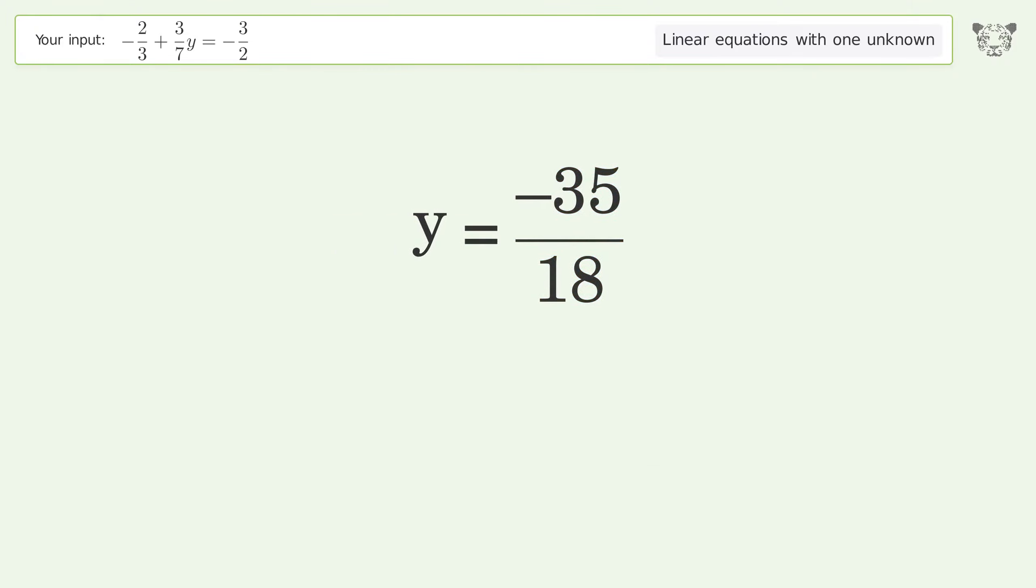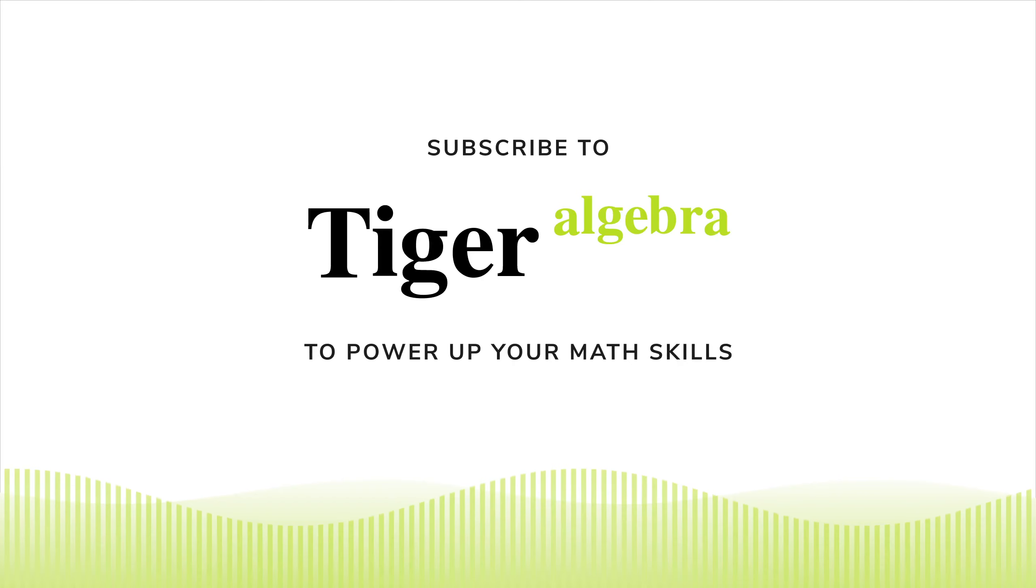And so the final result is y equals negative 35 over 18. Thank you.